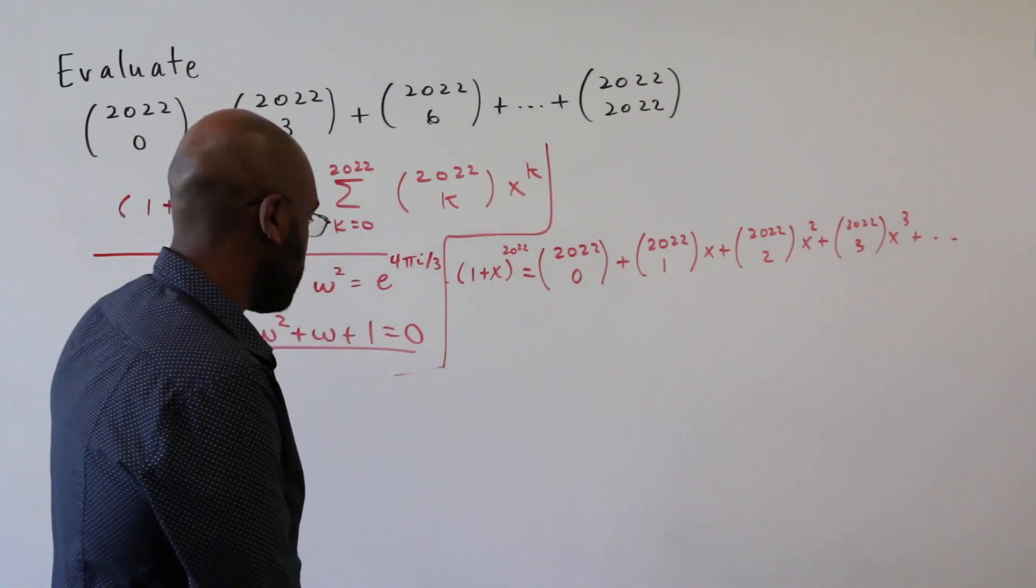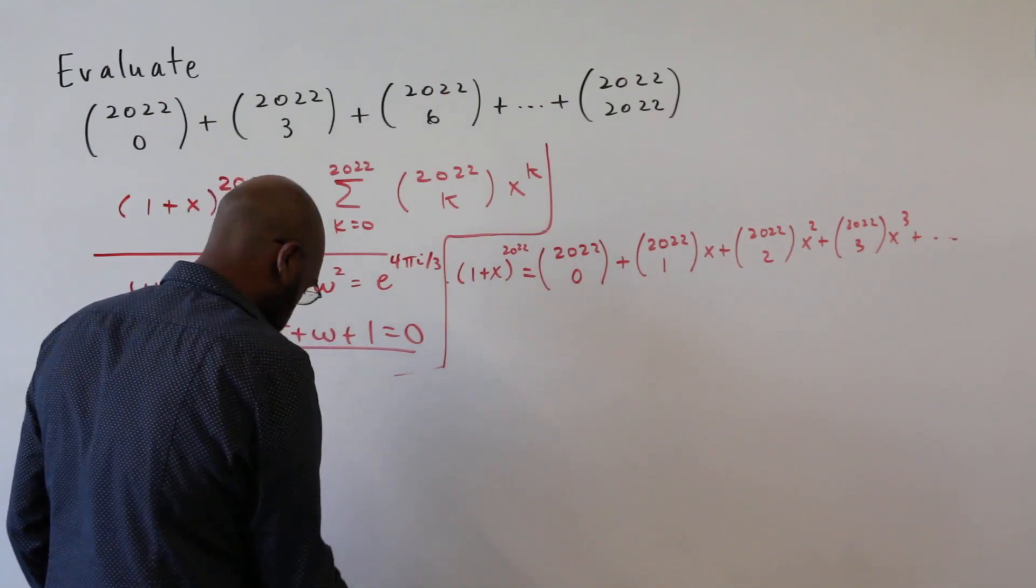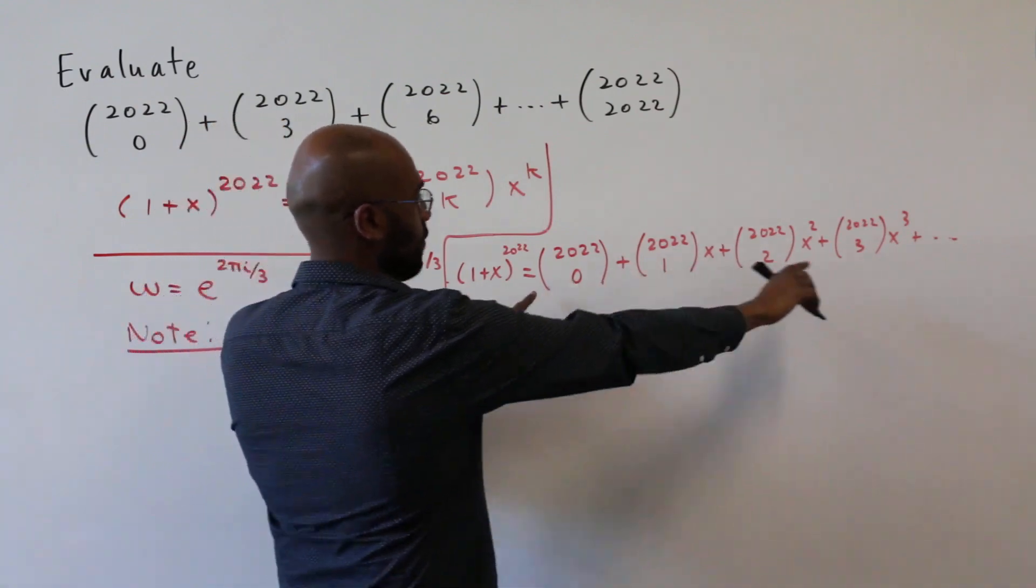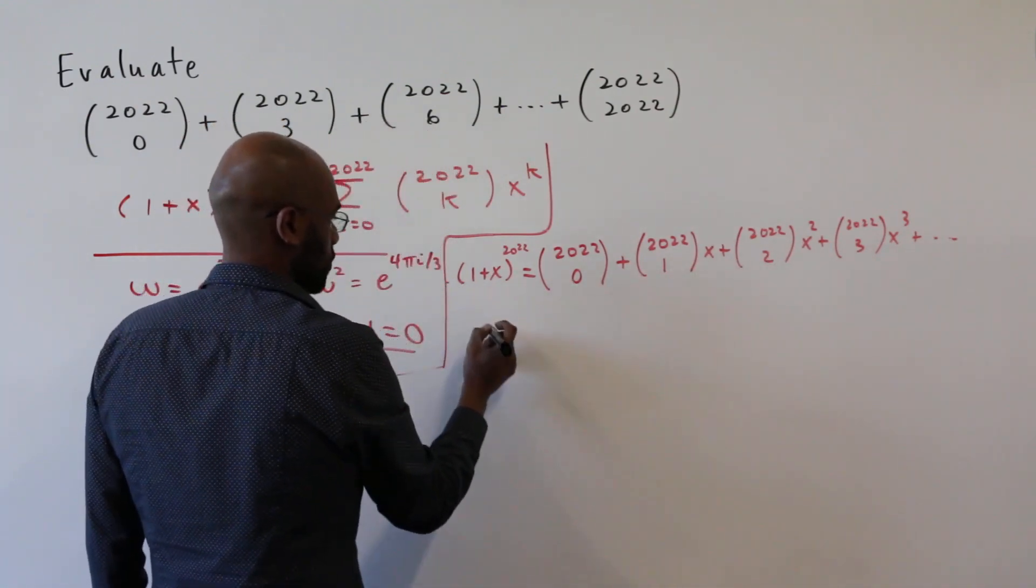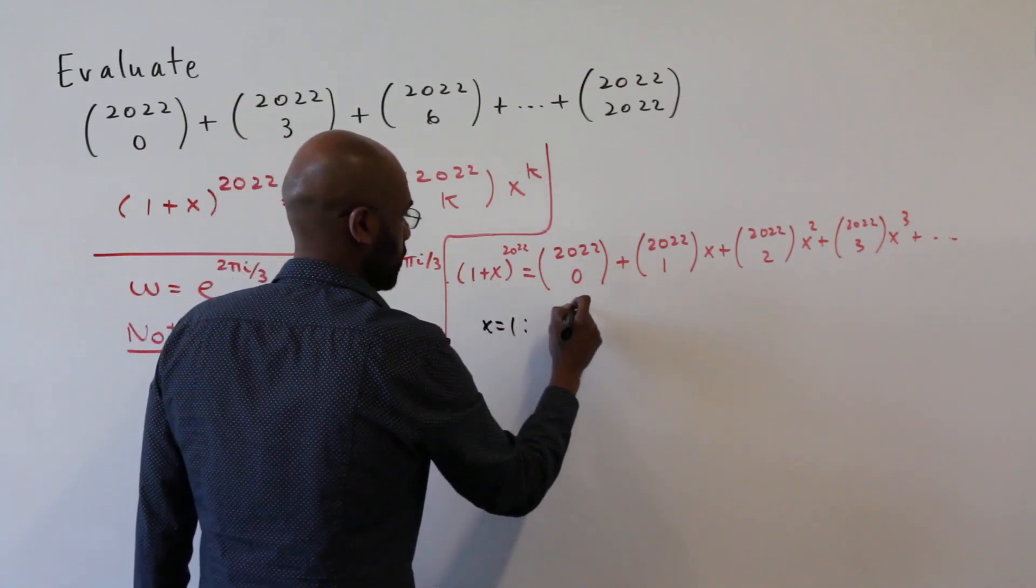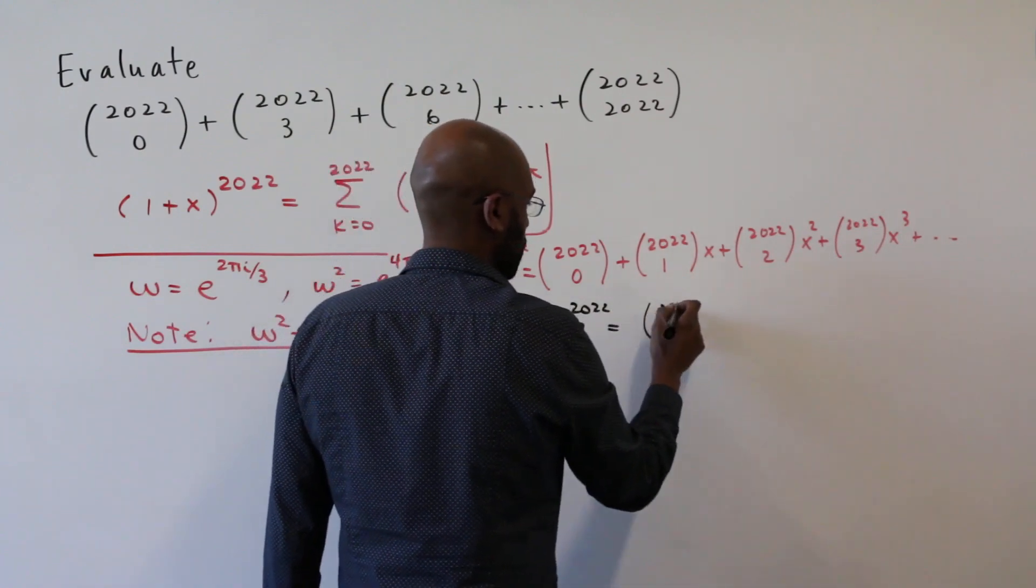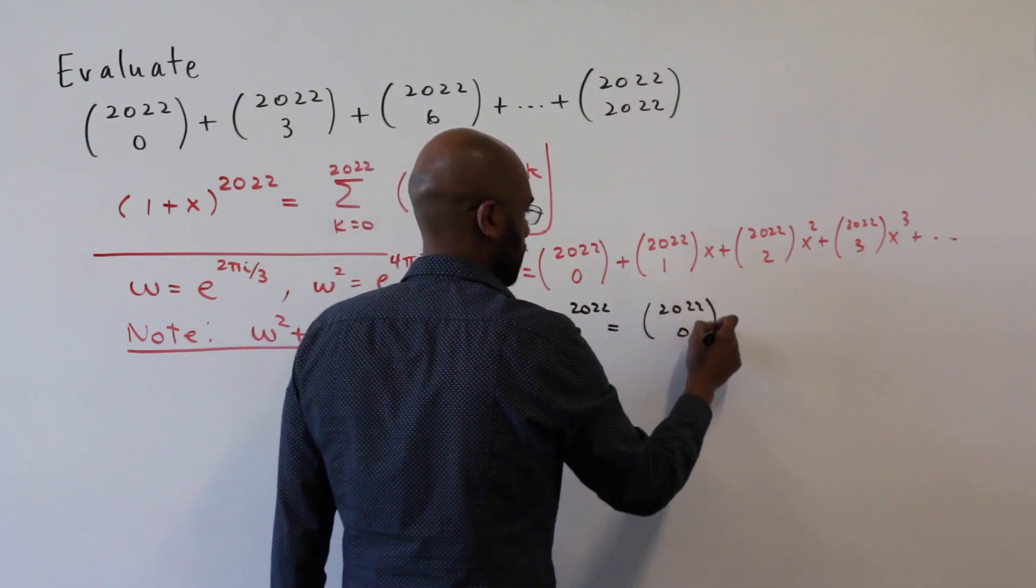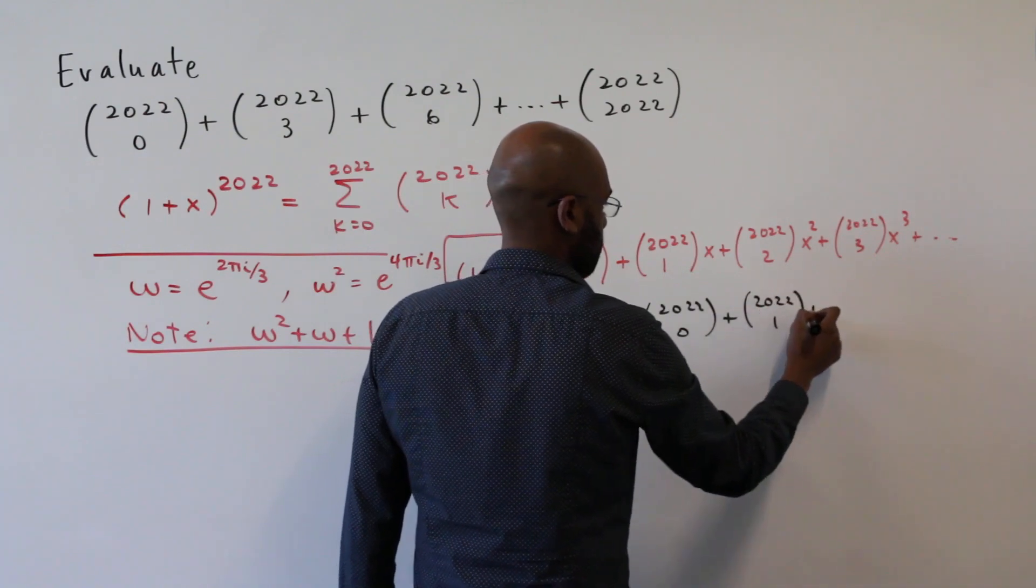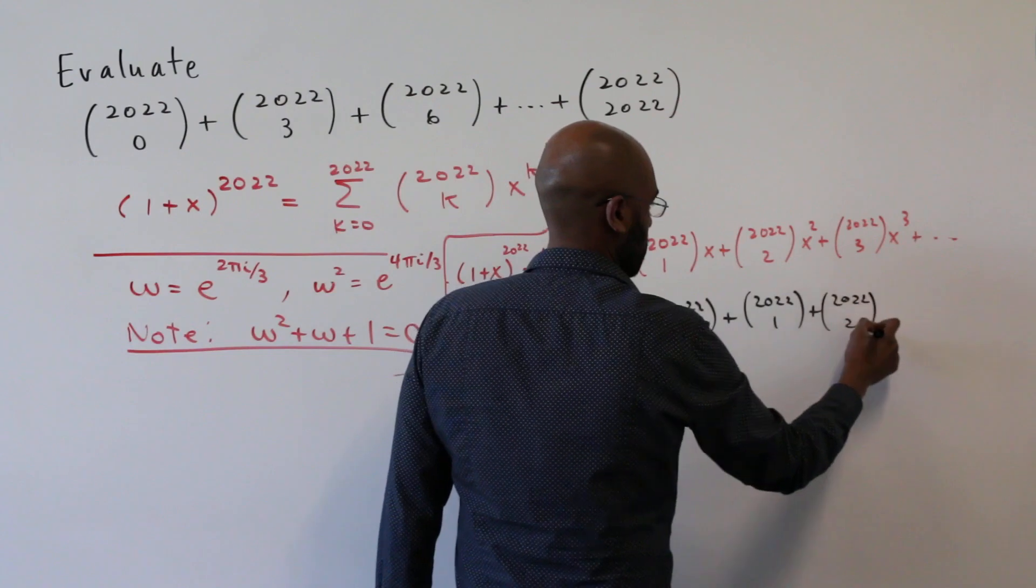Okay, so let's plug in some values here. If we plug in the value one for x, we'll get the sum of all the binomial coefficients. So when x is one, this tells us that two to the 2022 is the sum of all the binomial coefficients.